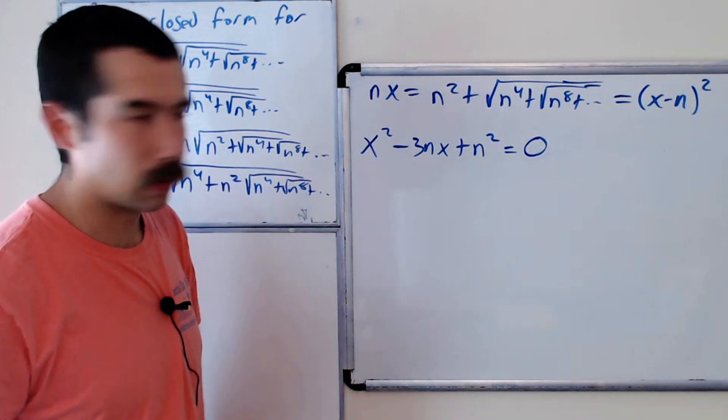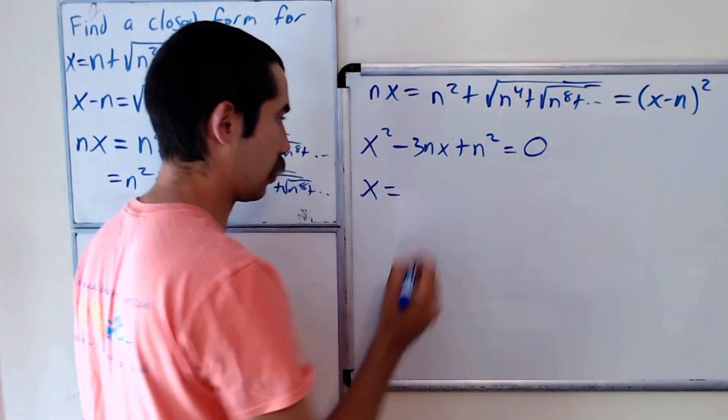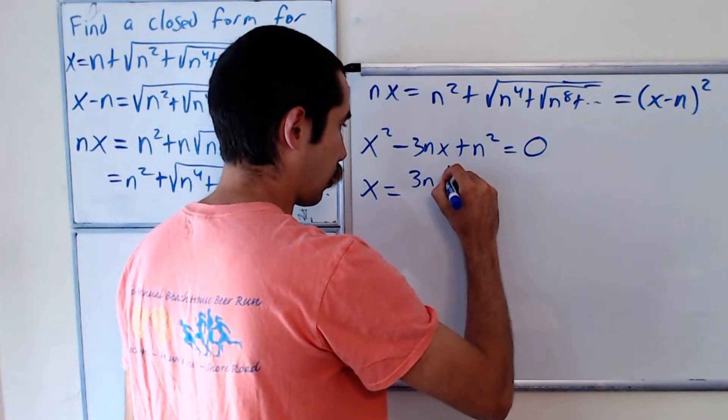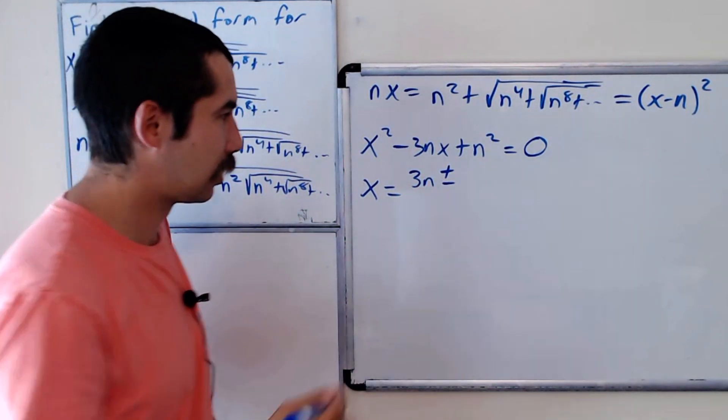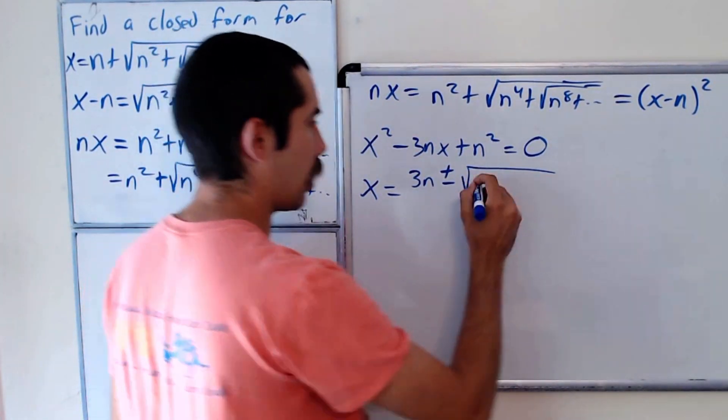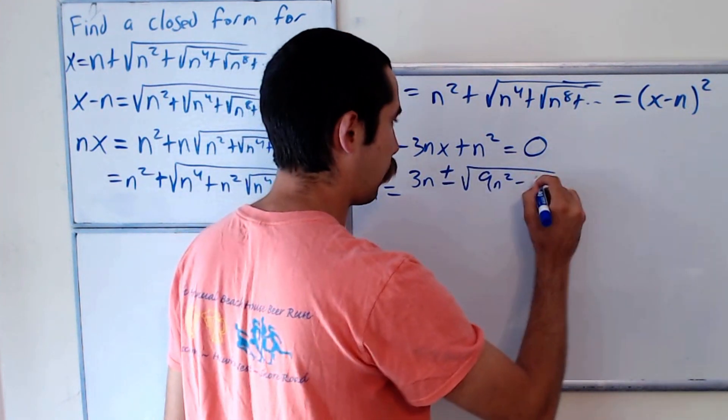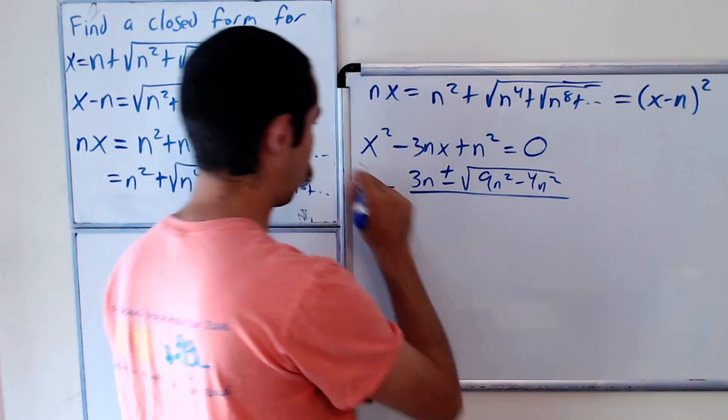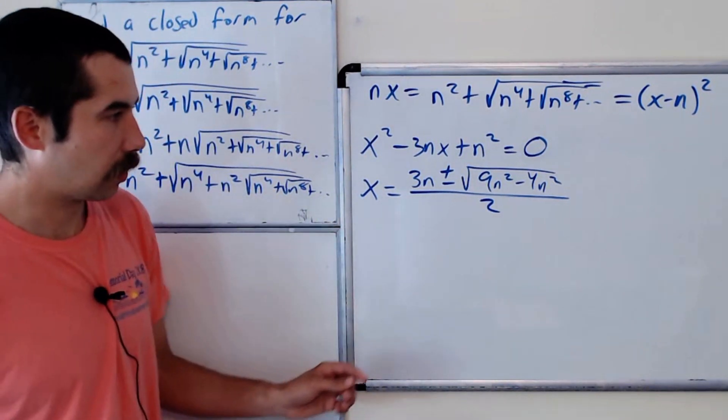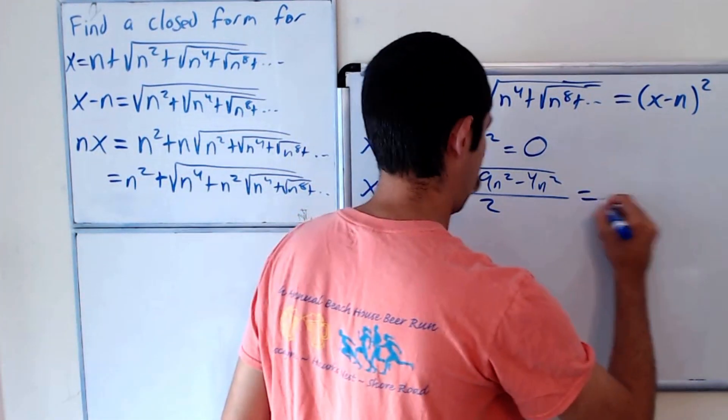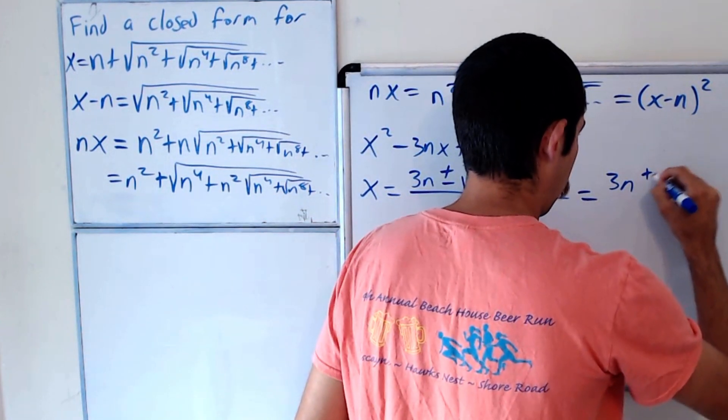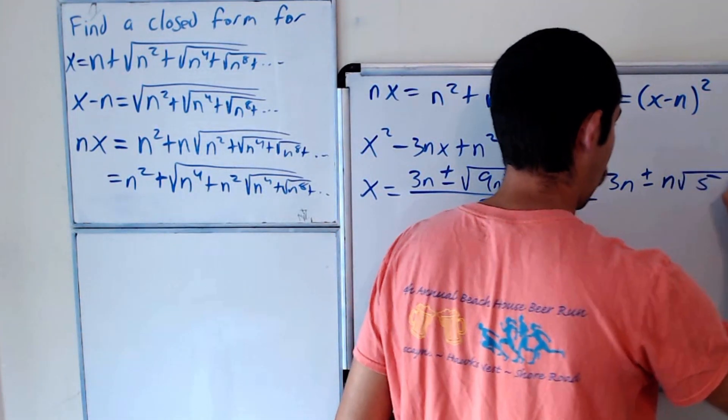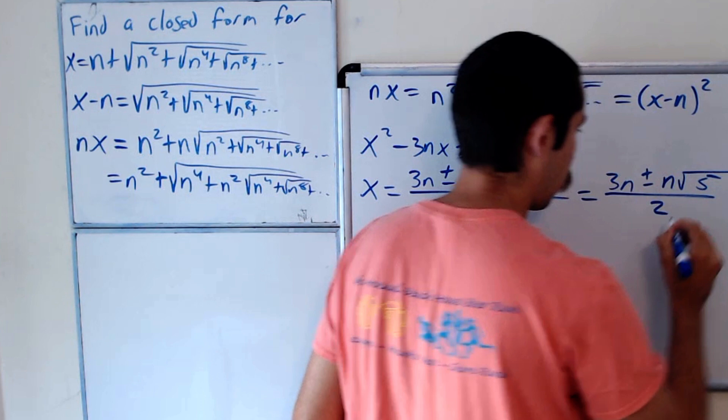And now we can solve this using the quadratic formula. So x equals positive 3n plus or minus, we'll have to check which one makes sense, the square root of 9n squared minus 4 times 1 times n squared. So minus 4n squared all over 2. And so this is equal to 3n plus or minus, we could factor out square root of n squared. So plus or minus n square root of 5 over 2.